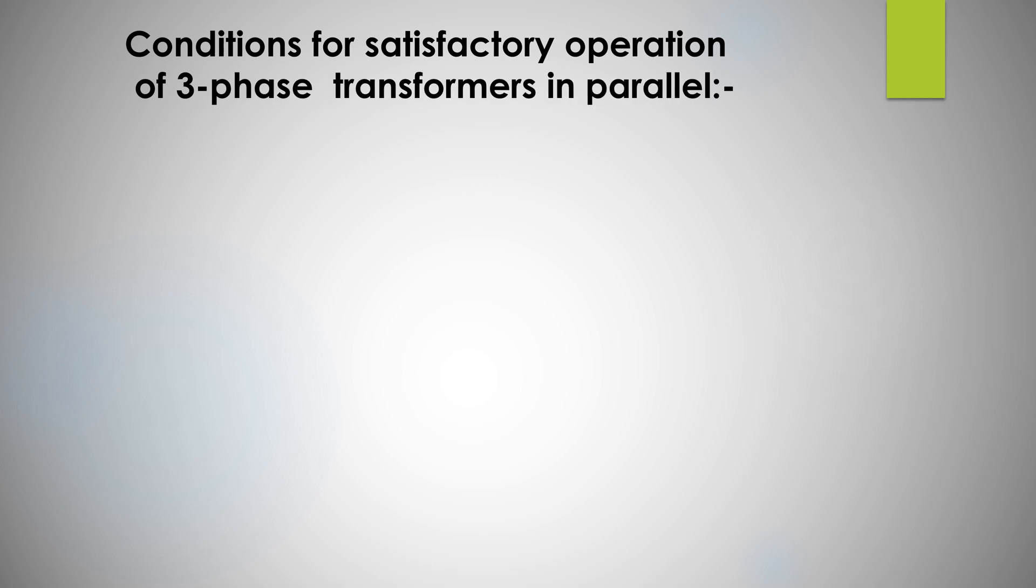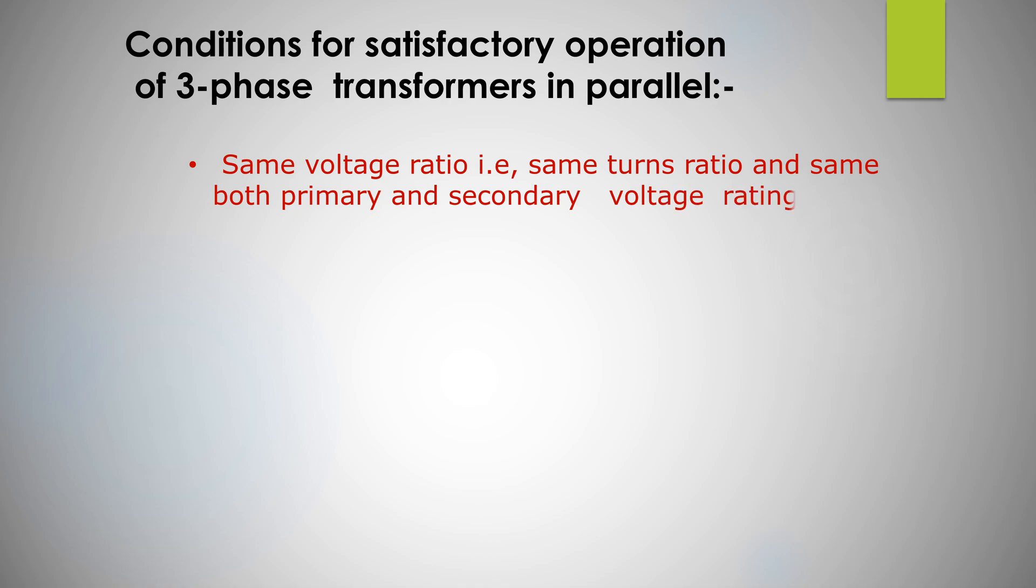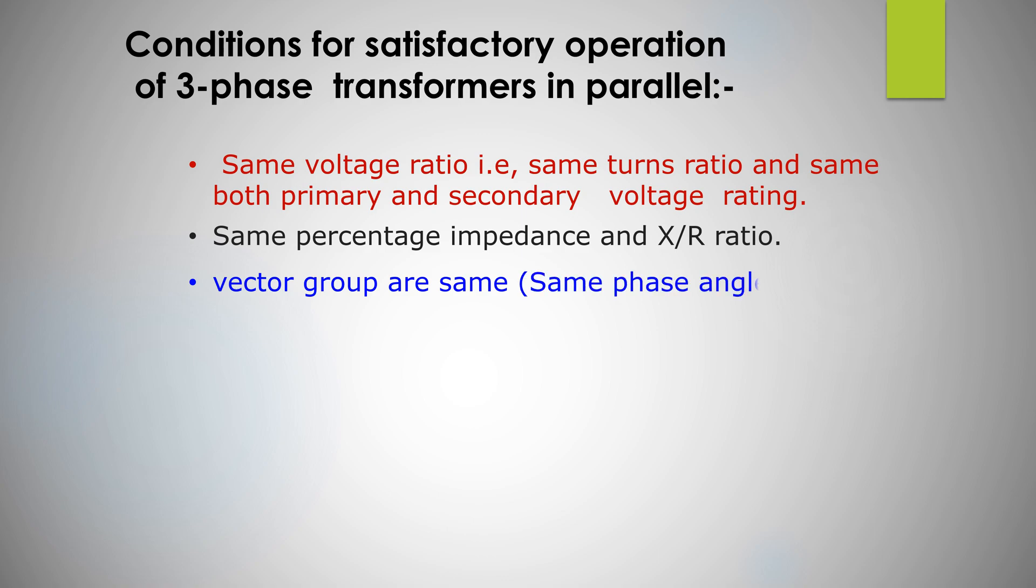Conditions for satisfactory operation of three-phase transformers in parallel: same voltage ratio, that is same turns ratio and same both primary and secondary voltage rating; same percentage impedance and X/R ratio; vector group are same; same phase angle shift.